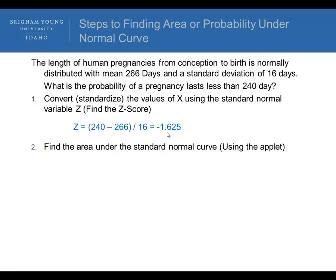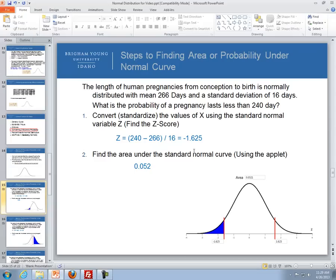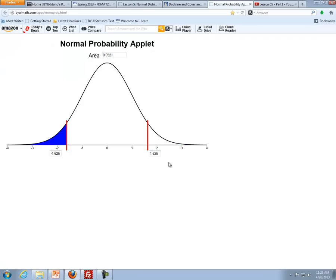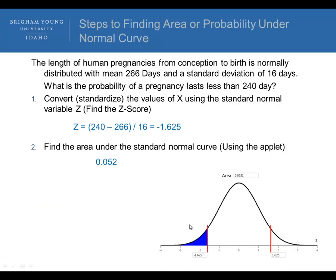Then we can go to the applet. We would type in negative 1.625, press enter. We're looking for less than, so it's shown here in terms of what to do. We only shaded the left. And so we get up here the probability. In this case, the probability is 0.0521. So the probability is about 5.2% or 0.052.